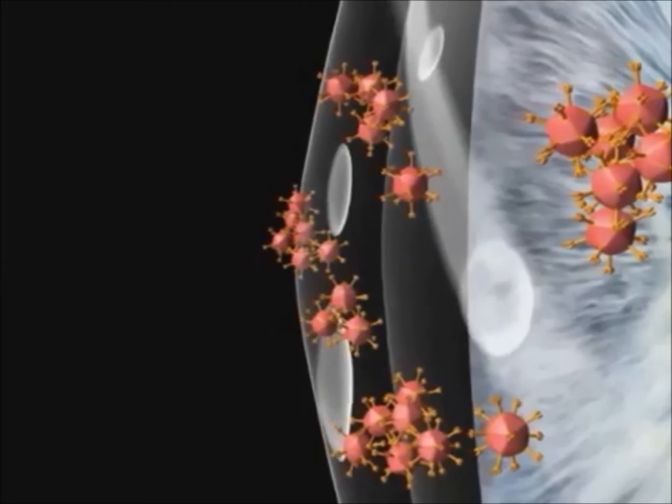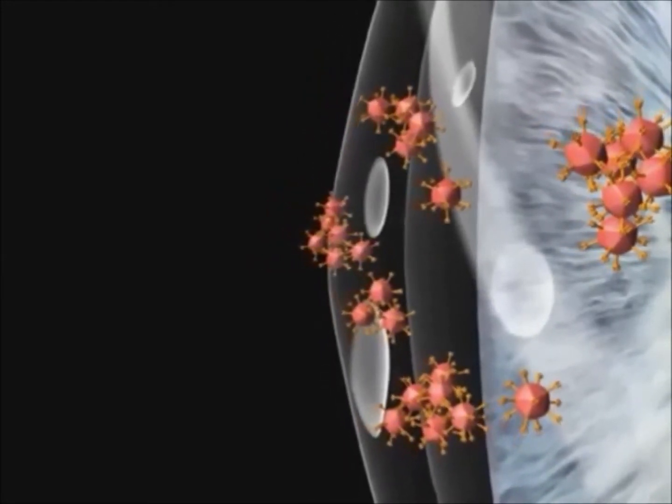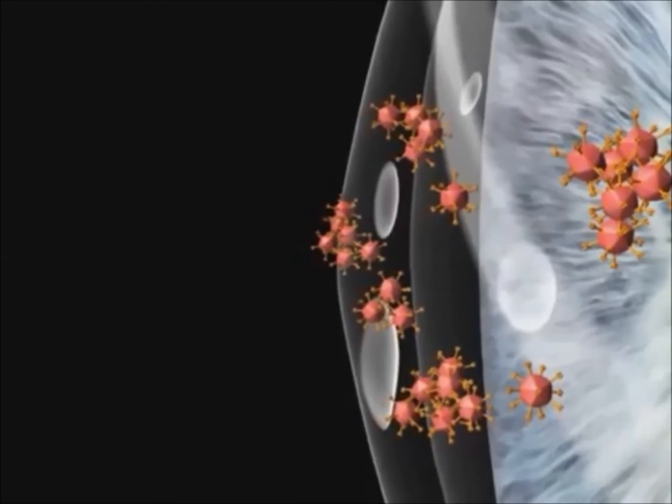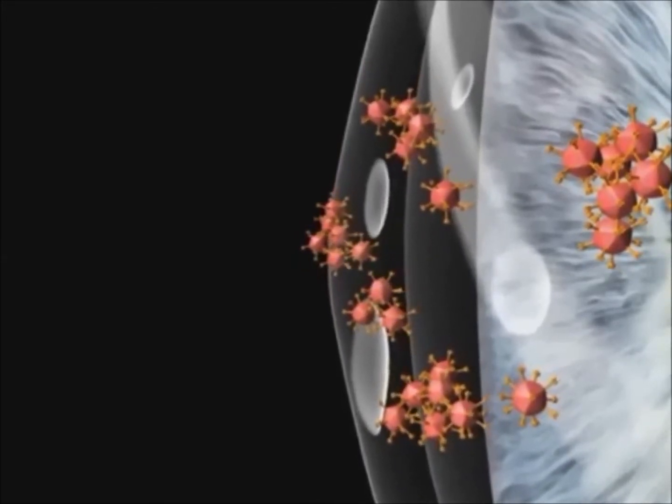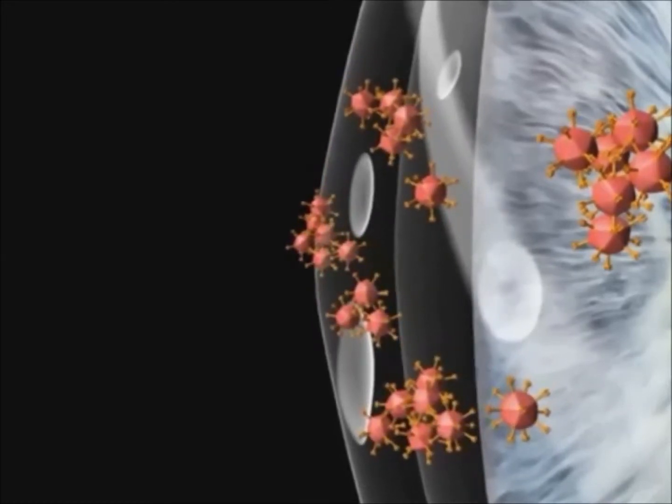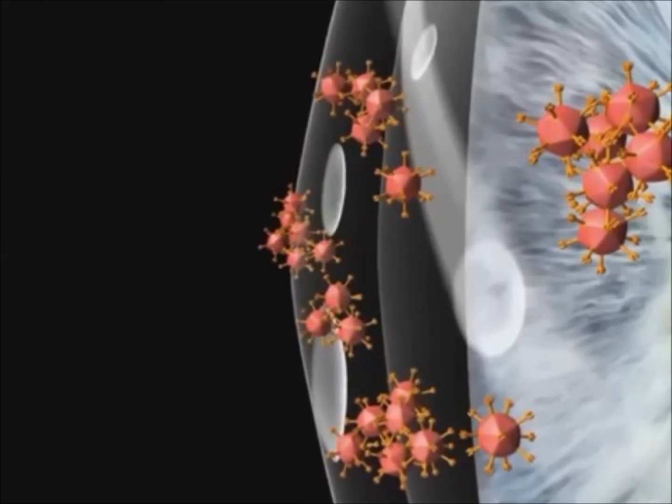Later in the course of infection, subepithelial infiltrates may form which impair the vision. Subepithelial infiltrates are gray to white cloudy spots that form in the cornea as a result of an immune reaction to the viral antigens.